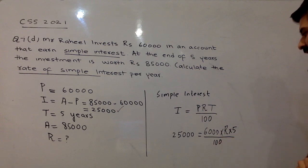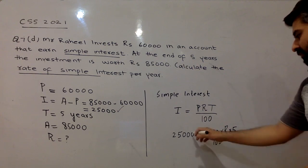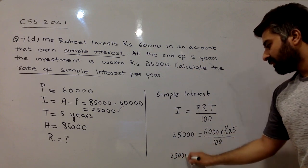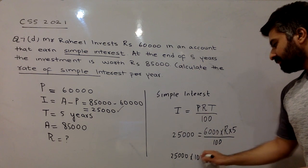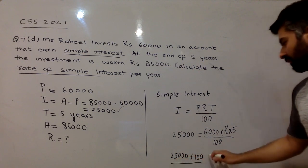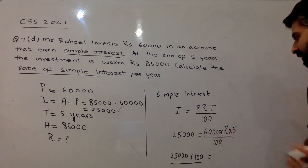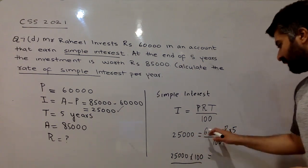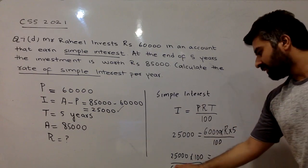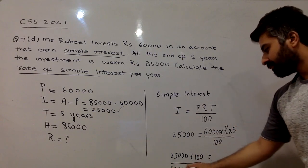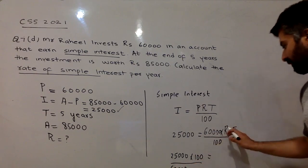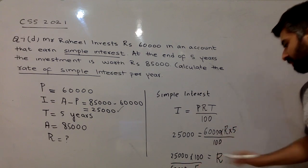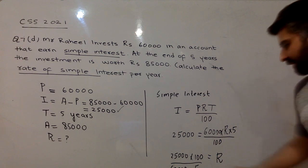So, from here we will calculate R. Multiply 100 with 25,000, 25,000 multiplied by 100, and you have 60,000, divide by 60,000. It's multiplied with R, so 60,000 will divide.